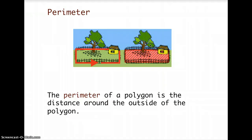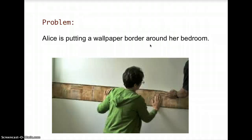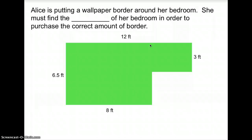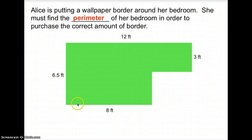So let's have an example problem. The problem is: Alice is putting a wallpaper border around her bedroom, and for Alice to put the wallpaper border she must find the perimeter of her bedroom so that she will know how much wallpaper border she has to buy. This is the diagram of Alice's bedroom, so let's solve what is the perimeter of her bedroom.